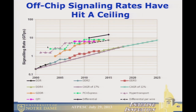Besides density, there's also signaling rate. This plot shows single-wire signaling rates for various interfaces over time. The DRAM curves — DDR, DDR1, DDR2, DDR3, DDR4 and projections — look like they're going to peak at about 8 gigatransfers per second per wire. The GDDR parts are about there now. And the high-speed interfaces — PCI Express, HyperTransport, QPI — are also either now or in the near future looking like they'll top out at about 8 gigatransfers per second.